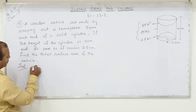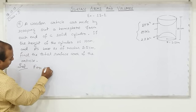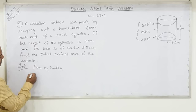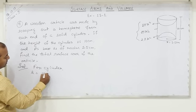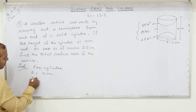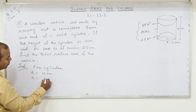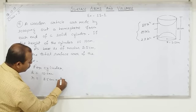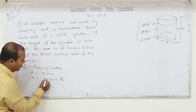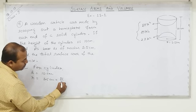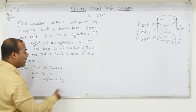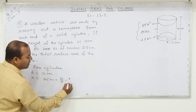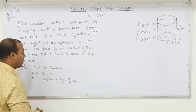We note the details for the cylinder: height = 10 cm, base radius = 3.5 cm. In fraction form, 3.5 = 35/10 = 7/2 cm.